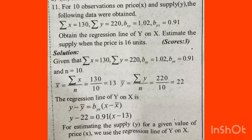For 10 observations on price x and supply y, the following data is obtained: Sigma x is equal to 130, Sigma y is equal to 220, bxy is 1.02, and byx is 0.91. We need to find the regression line of y on x, and then estimate supply when price x is 16.